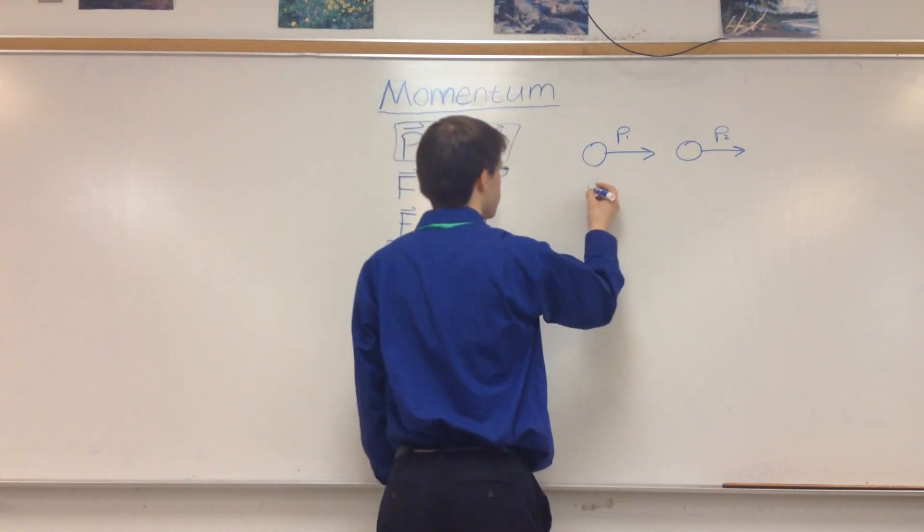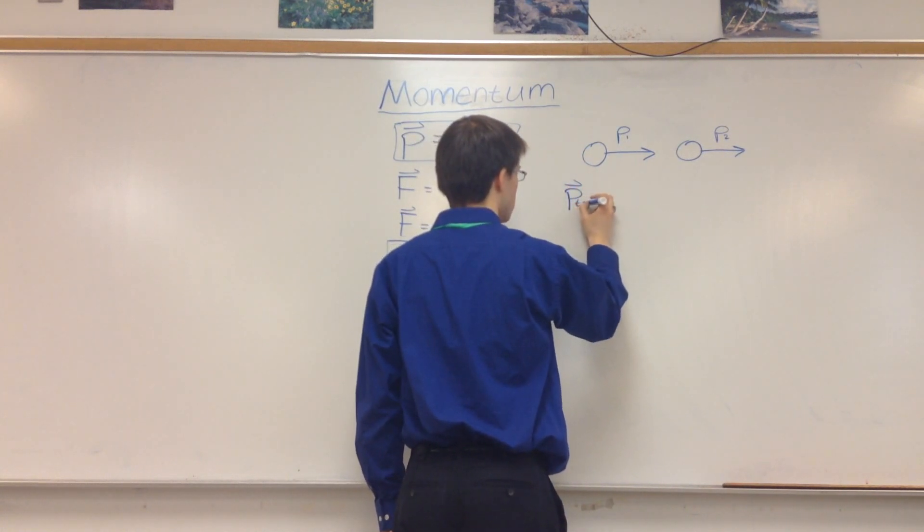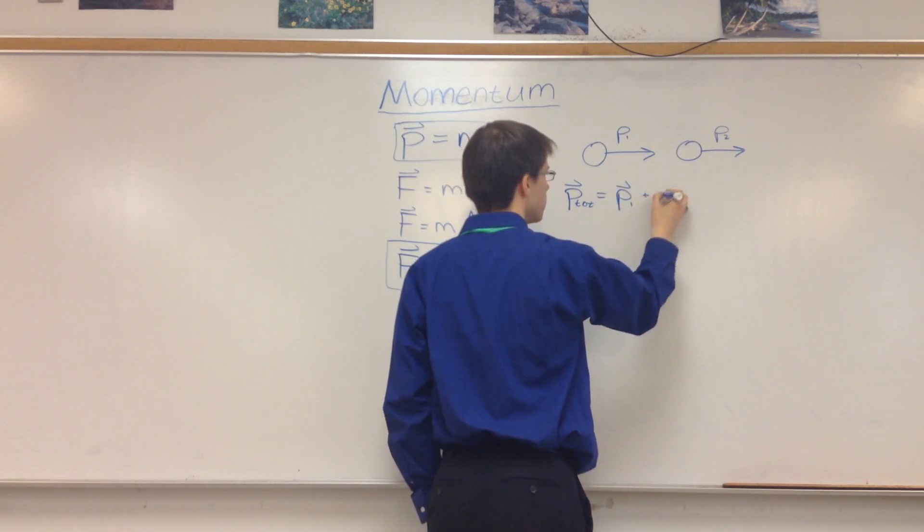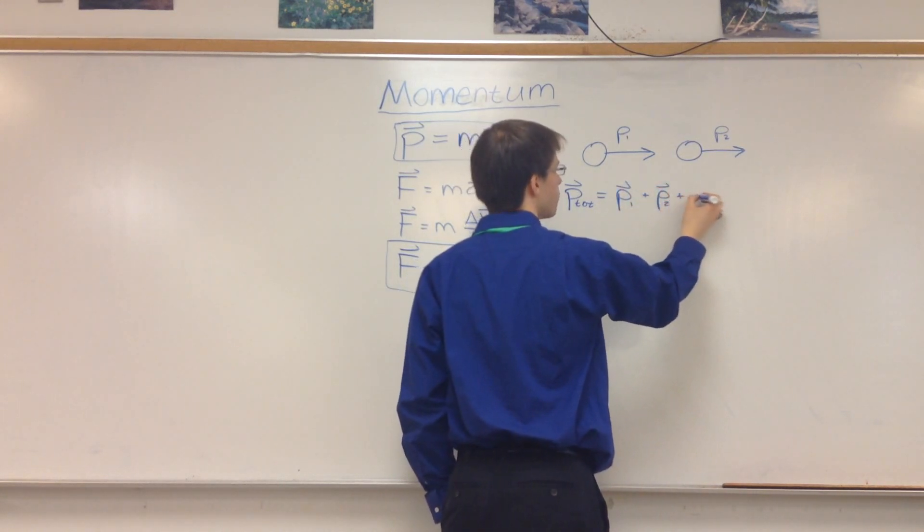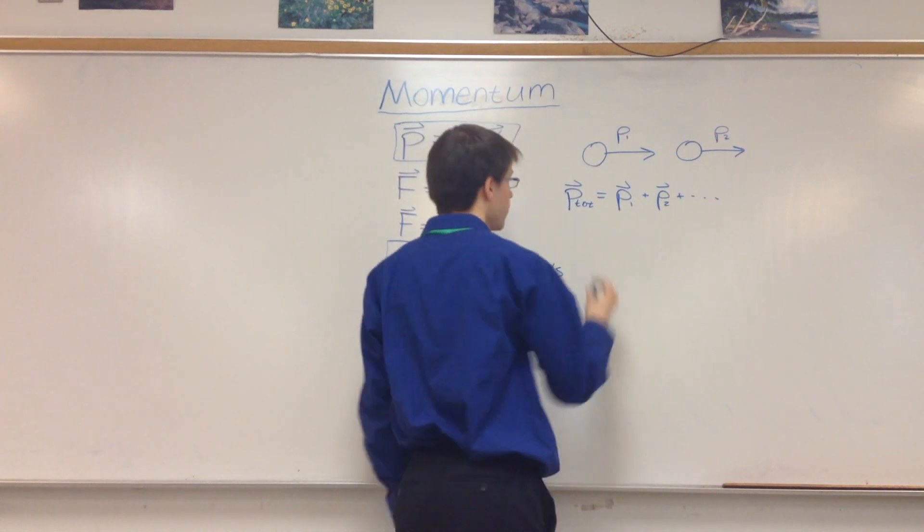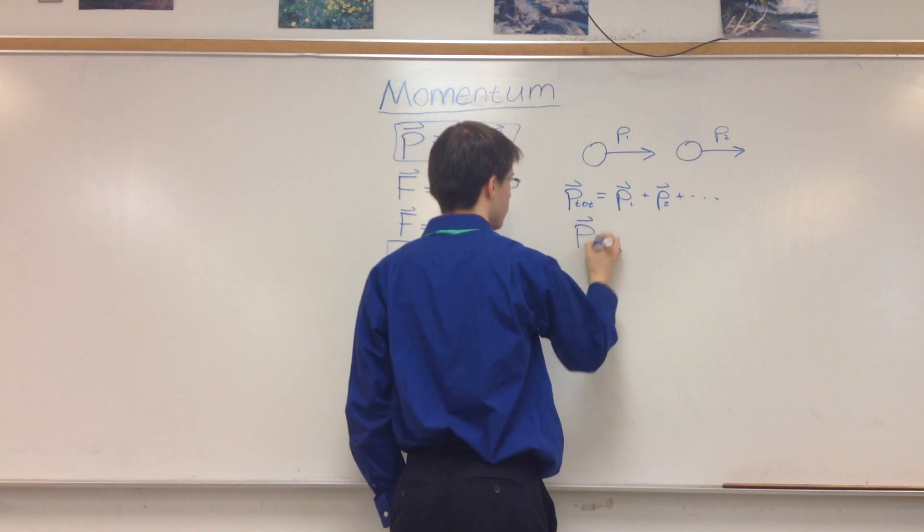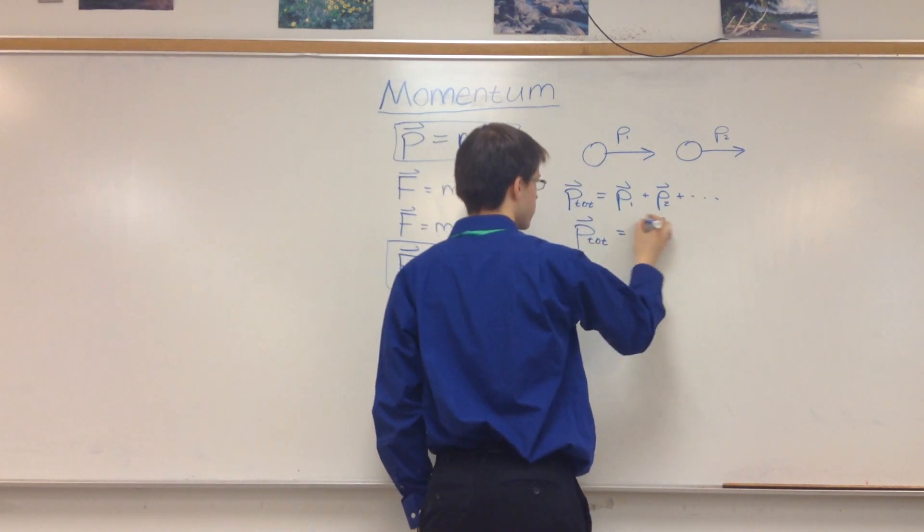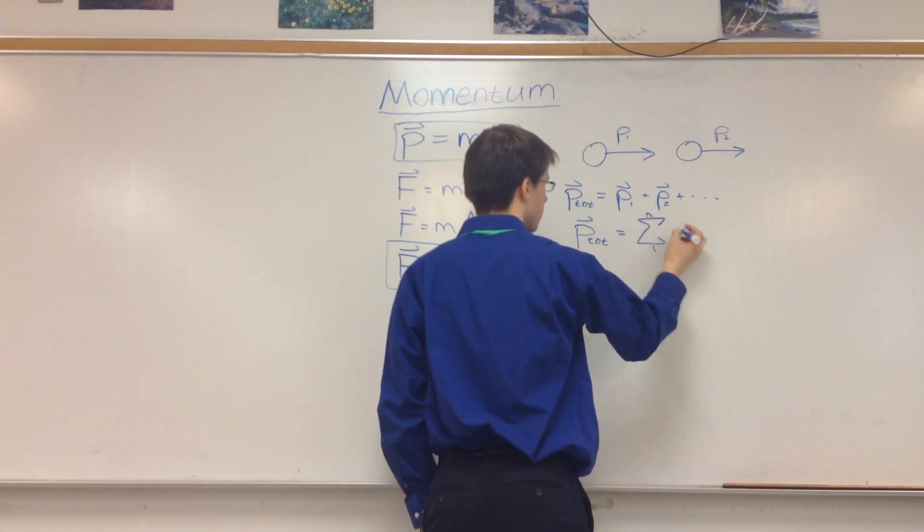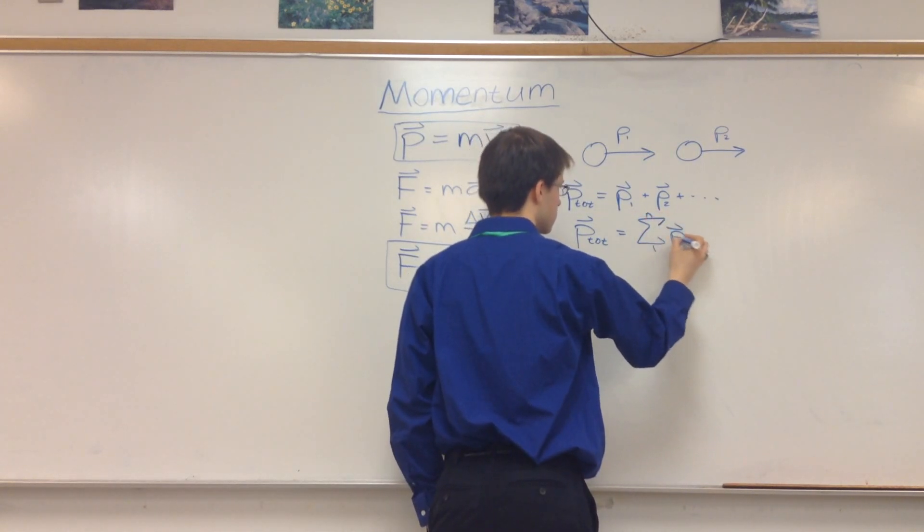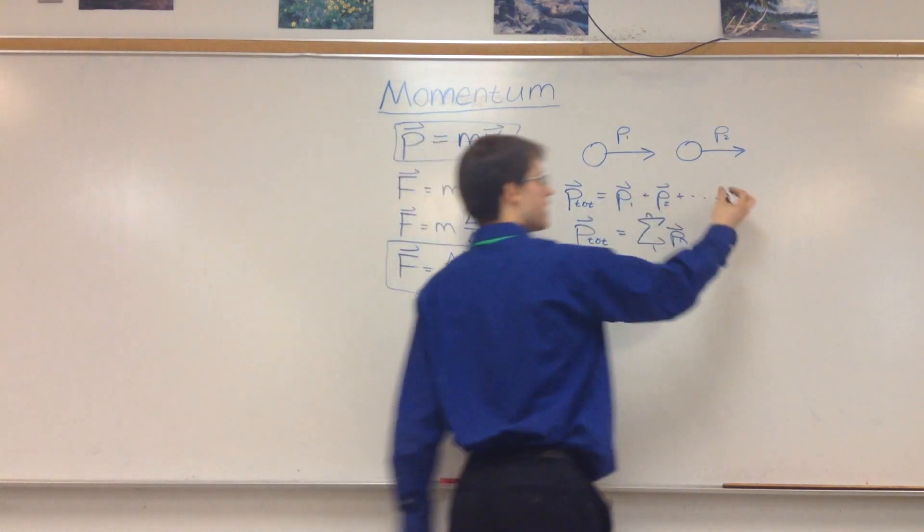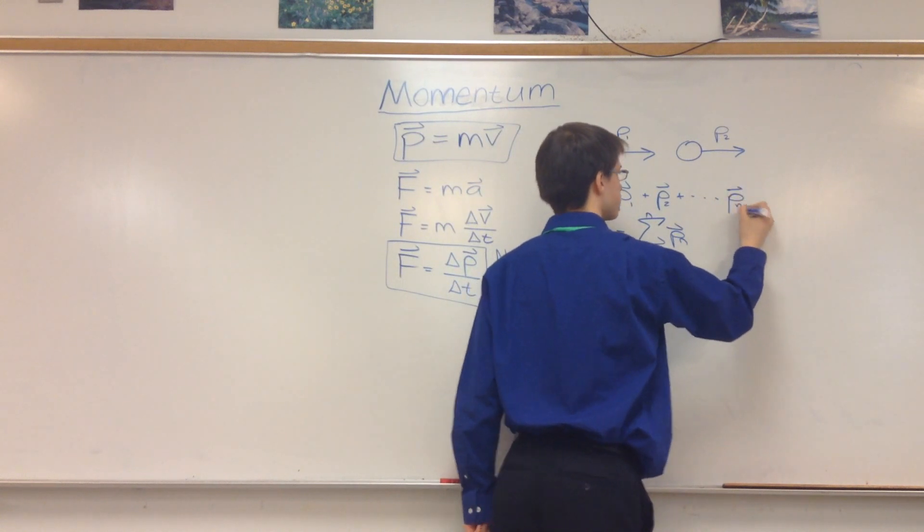So we can write that as the total momentum of a system is equal to P1 plus P2 plus so on and so forth. You can write this more concisely as if you have a system with n objects, the total momentum of the momentum of a system is equal to the sum from the first object to the nth object of the momentum of each of the objects, which is equivalent to this. I'm assuming that this ends at Pn. All right?